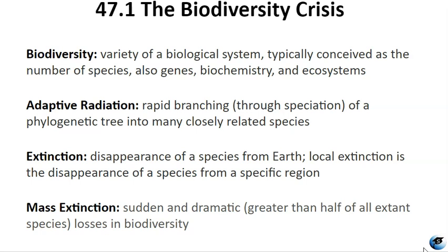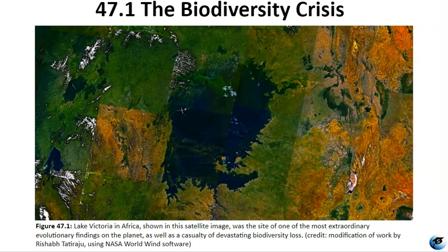Despite its importance, biodiversity faces many threats, primarily due to human activities such as habitat destruction, pollution, climate change, over-exploitation of species, and the introduction of invasive species. For example, in the 1980s there were hundreds of species of cichlids in Lake Victoria, each with diverse specializations living in different niches within the lake. The introduction of the Nile perch in 1963 led to the decline of cichlids, impacting around 200 species. Factors like declining water quality, increased fishing, and the Nile perch's predatory impact contributed to their eventual extinction.